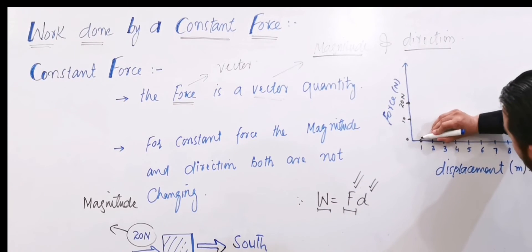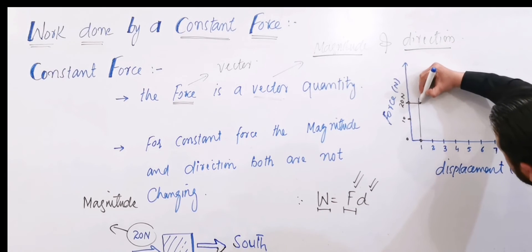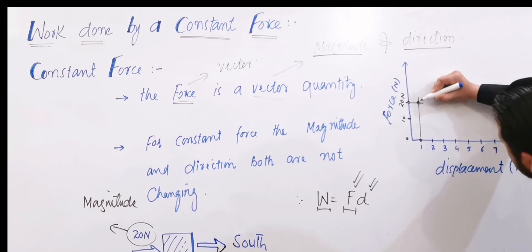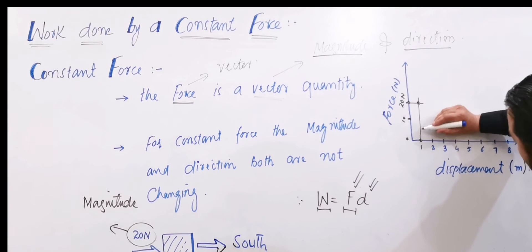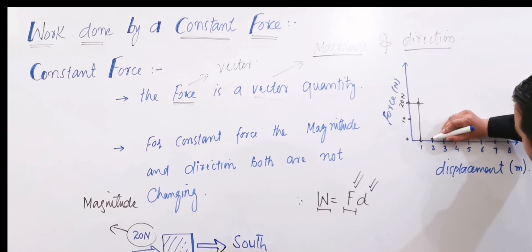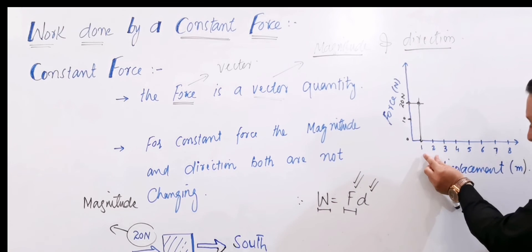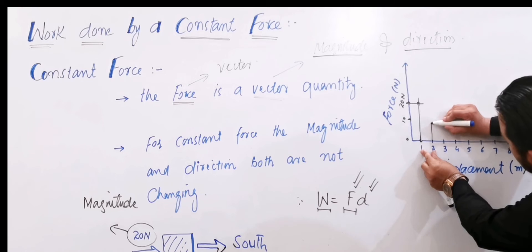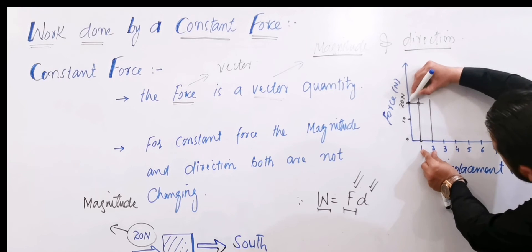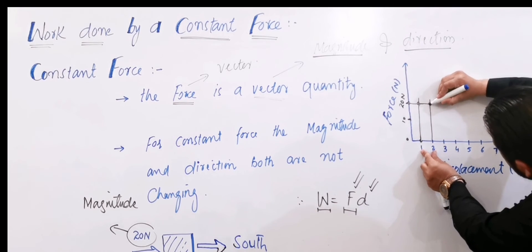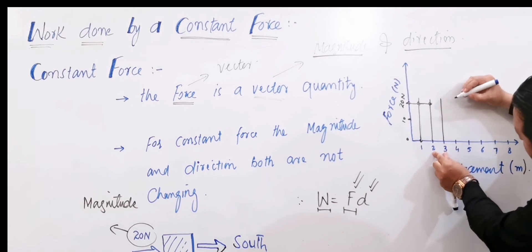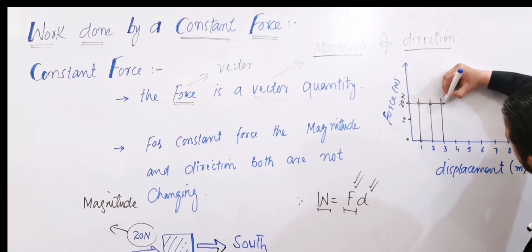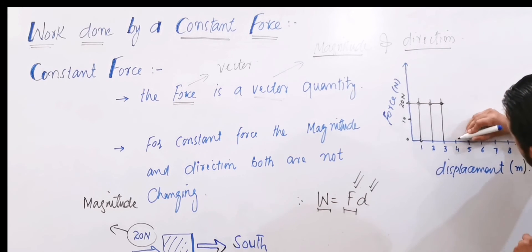Now from here we draw a perpendicular line down. From here also draw a perpendicular line, so there's a shared region formed. Again when the body moves 1 meter distance or displacement, we draw perpendiculars from here as well. This is the graph that forms. And so on - 1 meter distance covered, displacement, with 20 Newton applied again. This is how it continues.